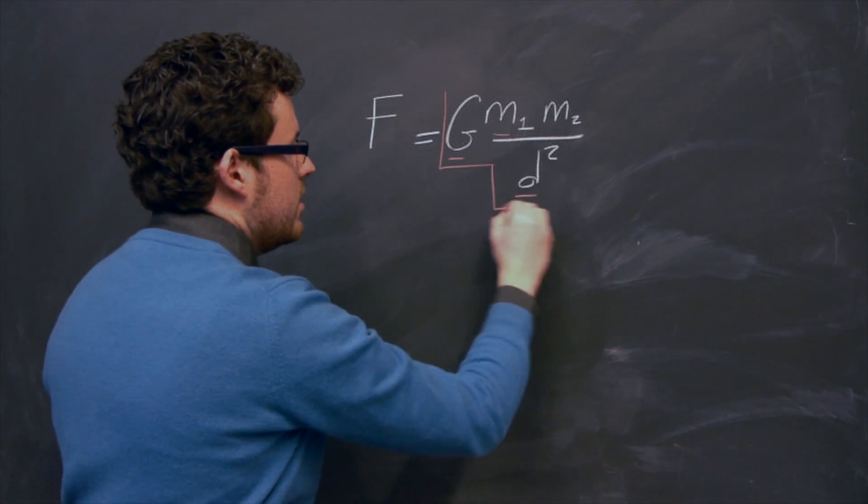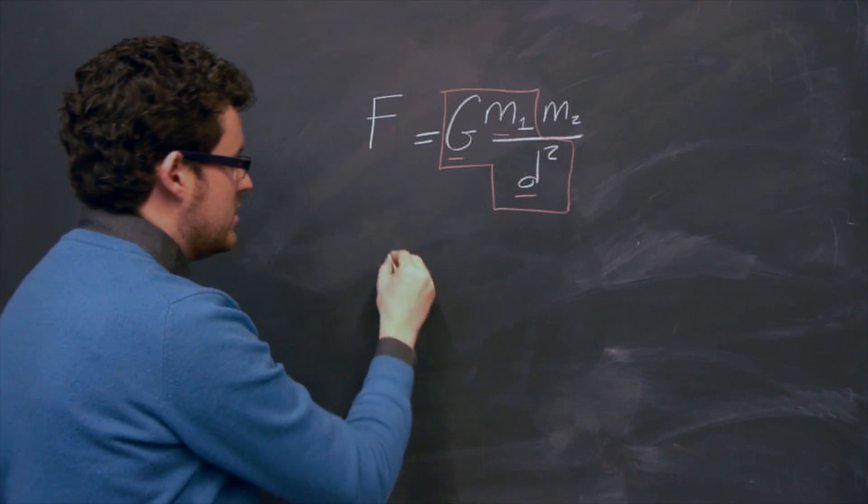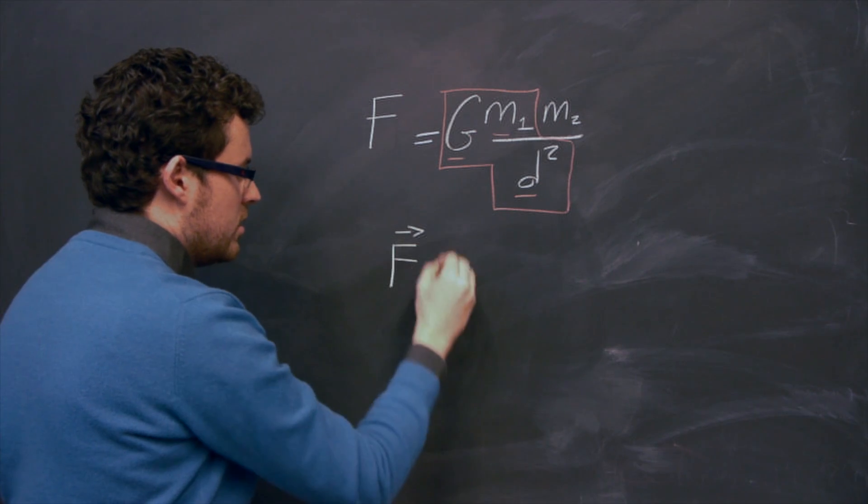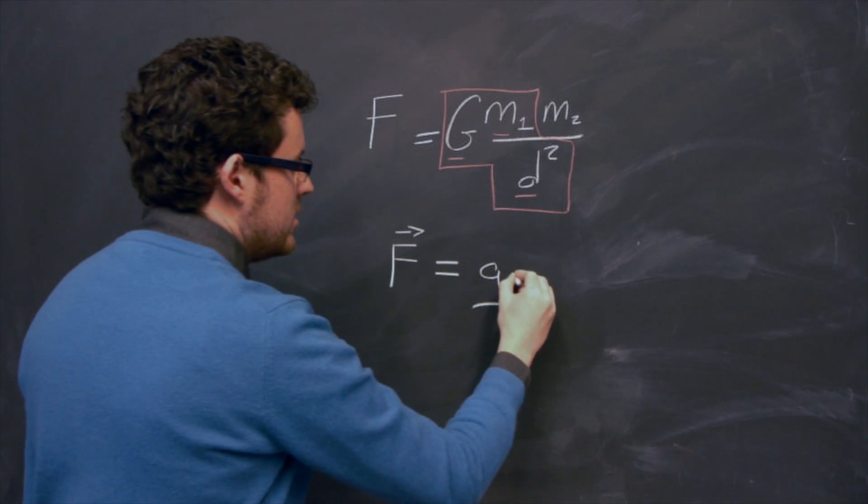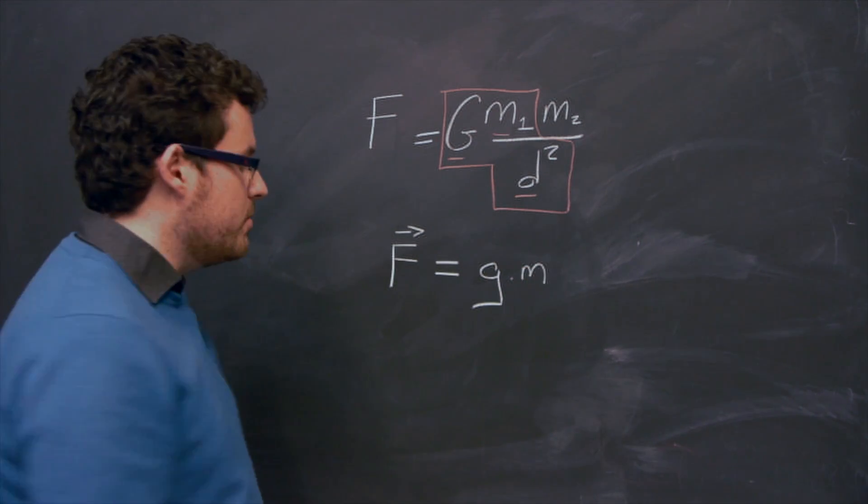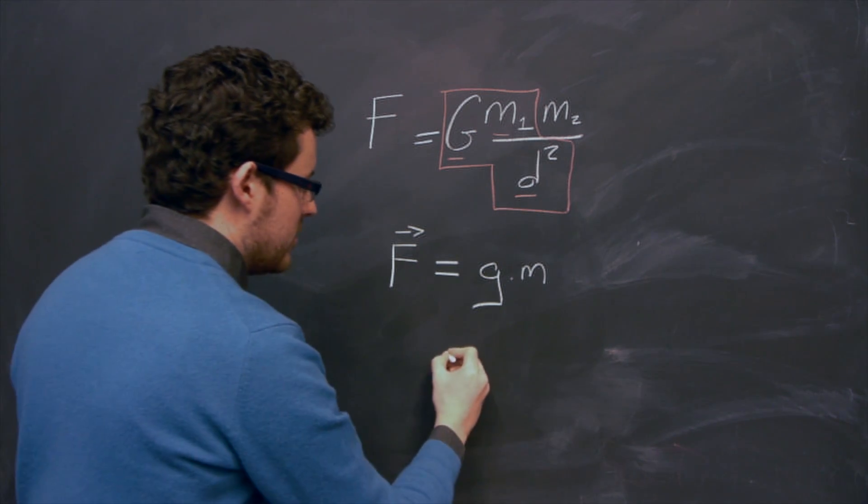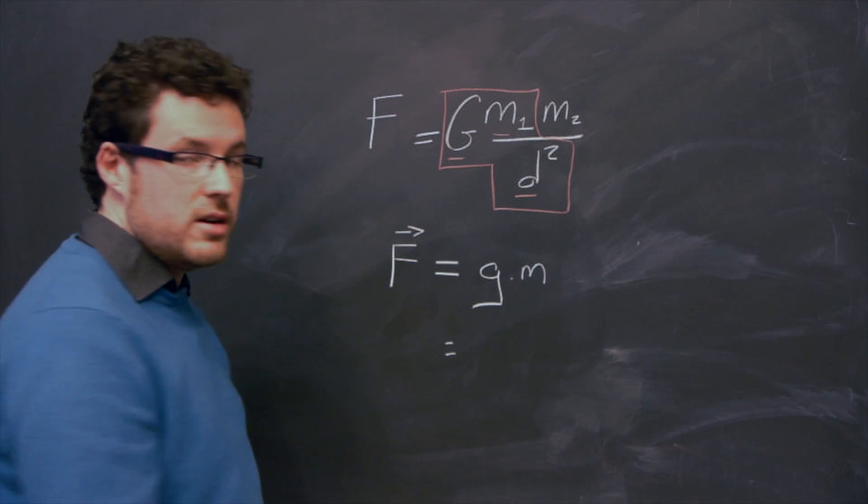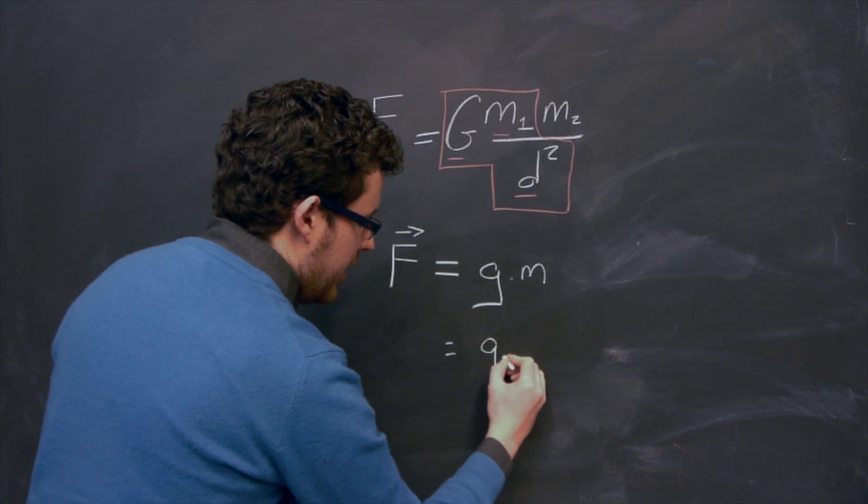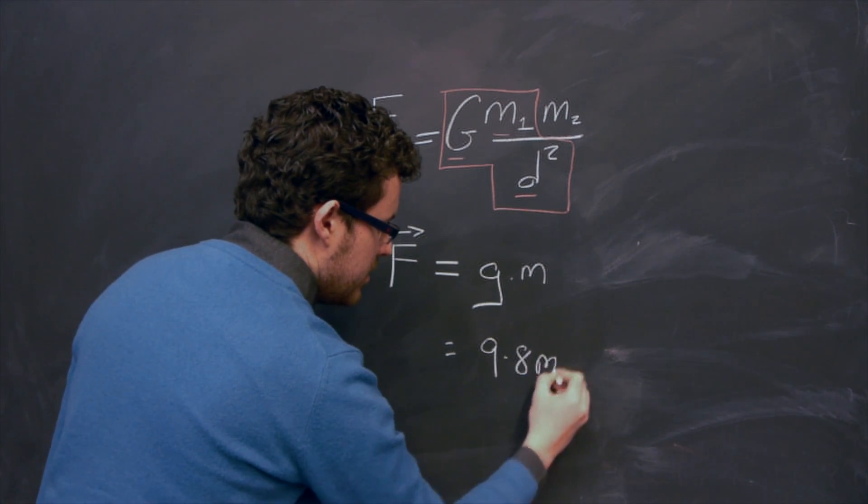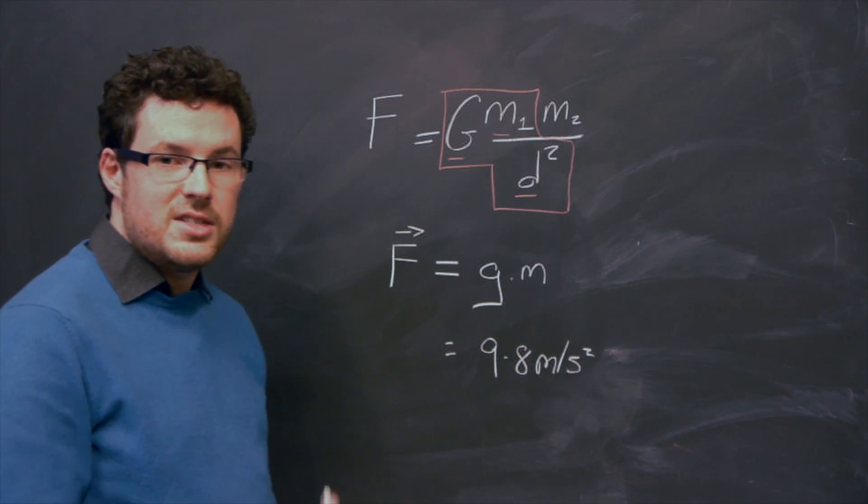So we can combine these terms here, which reduces this equation F to a value called little g times m, the mass of the apple. And this value here is acceleration due to gravity on the earth's surface, and all objects on the earth's surface will feel this acceleration. And it's given by the value 9.8 metres per second squared. And the purpose of this experiment is for us to measure that value.